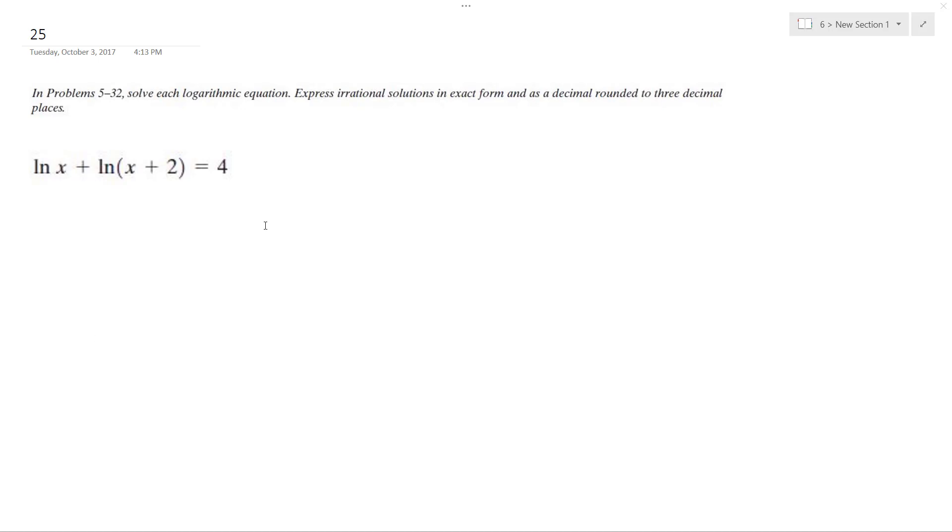Solving this problem, we can combine like terms so it becomes natural log of x squared plus 2x equals natural log of e to the fourth. Now we can drop the natural logs.